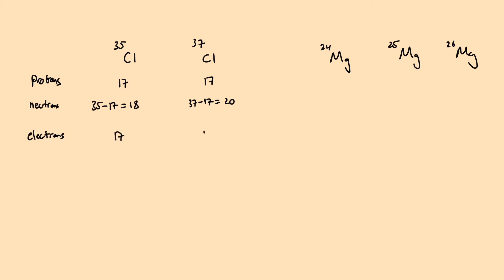Coming to the number of electrons: if these atoms are neutral, the number of protons has to be equal to the number of electrons. We already know the number of protons for chlorine is 17, no matter how many neutrons it has. So the number of electrons would be 17 for both isotopes. Another example is magnesium, which has three common isotopes with mass numbers of 24, 25, and 26. Because they're isotopes of the element magnesium, they have the same number of protons but a different number of neutrons.